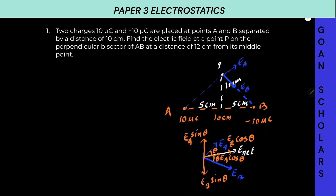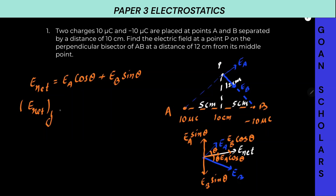So let us solve this using components. First, let us figure out E net. E net along the X axis will be EA cosθ plus EB cosθ. And what will be our net electric field along the Y axis? E net along Y axis will be EA sinθ upward, while EB sinθ is downward, so it will be EA sinθ minus EB sinθ.